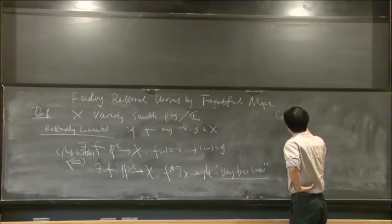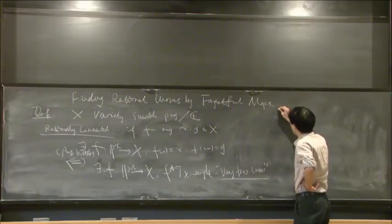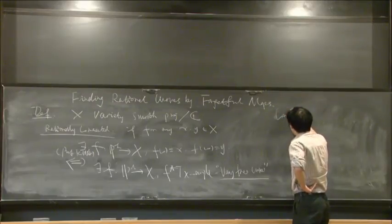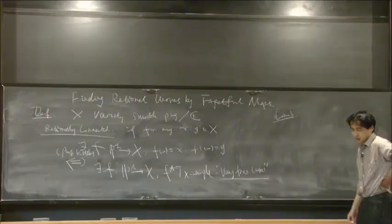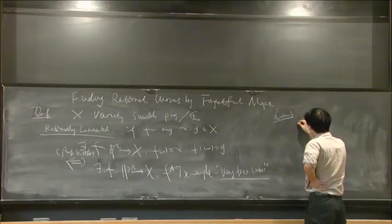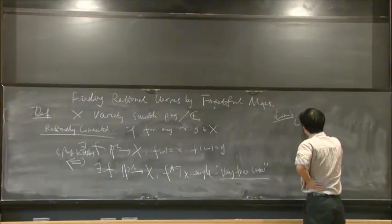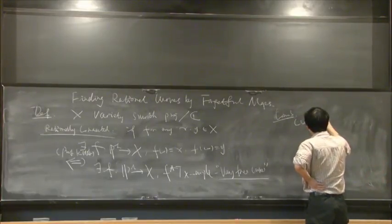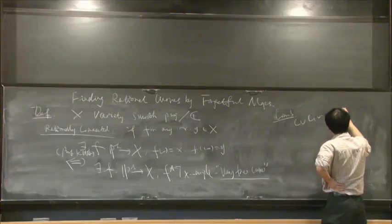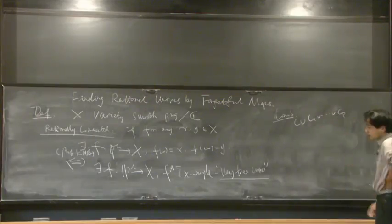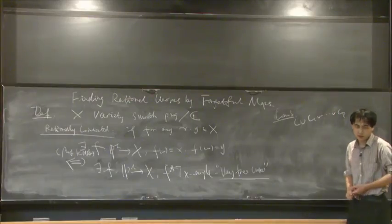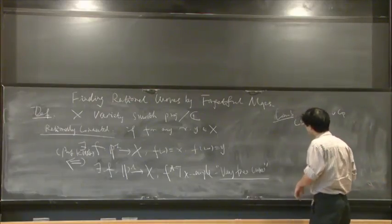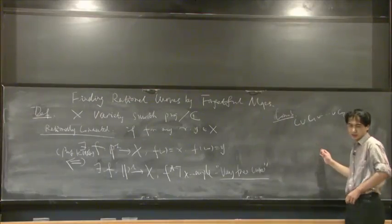We introduce a main geometric construction. A comb is a nodal curve C ∪ C₁ ∪ ... ∪ Cₚ. They form a nodal curve; they intersect transversely with each other, and the curve is not necessarily stable.